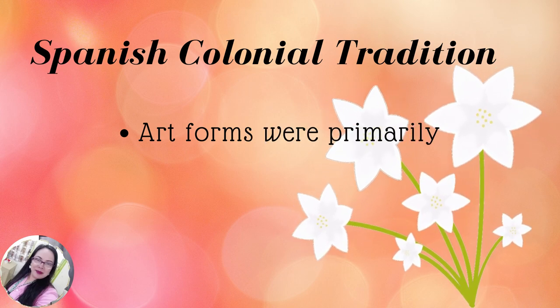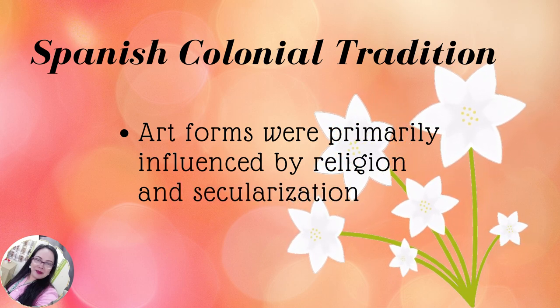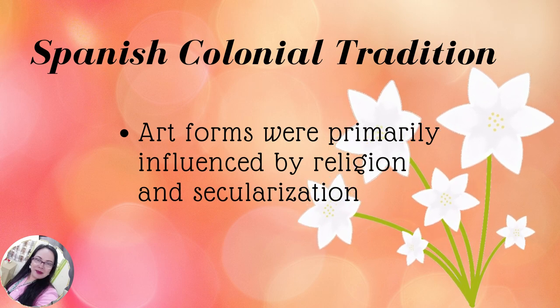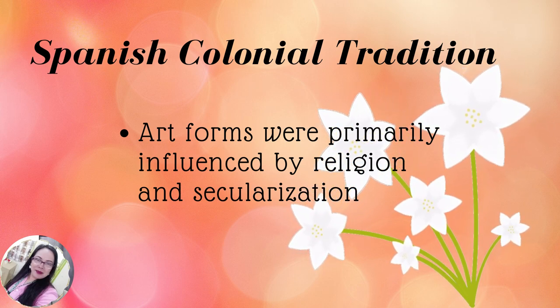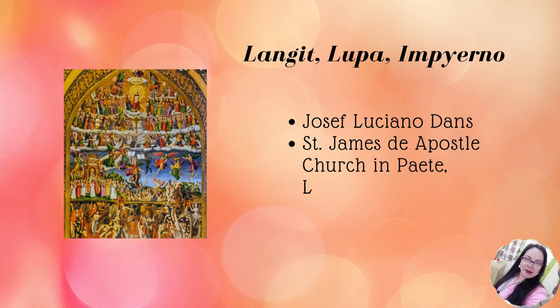In the Spanish colonial tradition, art forms were primarily influenced by religion and secularization. In this time, Spaniards used arts to propagate the Catholic faith. An example is 'Langit, Lupa at Impierno' by Jose Luciano Dans — a wall painting found in St. James the Apostle Church in Paete, Laguna. This painting was dated 1850 and depicts heaven, the crucifixion of Christ, earth, Adam and Eve, and hell with sinners with different transgressions.